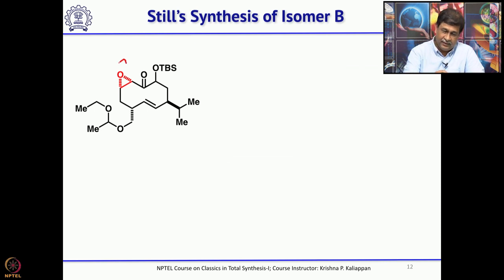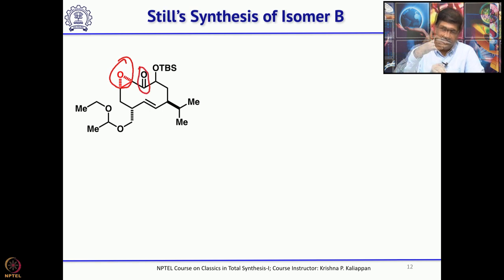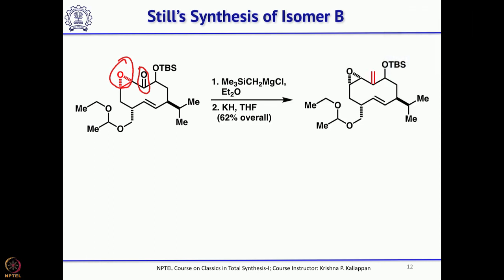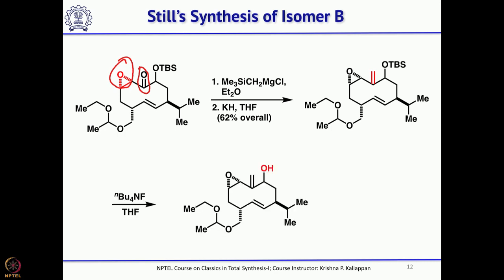He worked around and thought to get the epoxide arising from the ketone using a different approach. First he did Peterson olefination to introduce the double bond. Then, to selectively epoxidize, it is better to remove the TBS group to have an allylic alcohol which can direct the epoxidation. So he removed the TBS group and treated with vanadium acetylacetonate and t-butyl hydroperoxide, which gave the product where CH2 is beta.